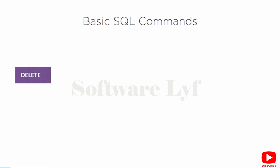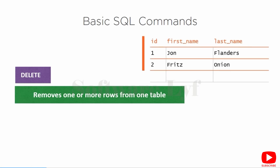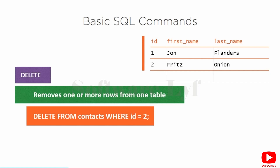The last of the basic SQL commands is DELETE. DELETE removes one or more rows from one table. DELETE FROM contacts WHERE id = 2 — the DELETE FROM is the full delete command, contacts is the table I want to delete rows from, and WHERE id = 2 is my restriction. Just like UPDATE, if I say DELETE FROM contacts and don't specify any WHERE clause, that's going to delete all the rows in my table. Having a WHERE clause in this case is almost always going to be the case. That will restrict the delete to just those rows that match the expression in the WHERE clause — in this case, getting rid of the row with Fritz in it.